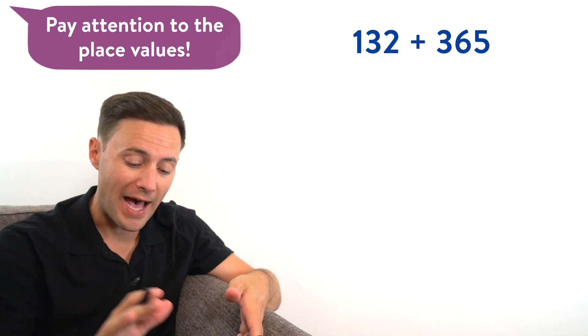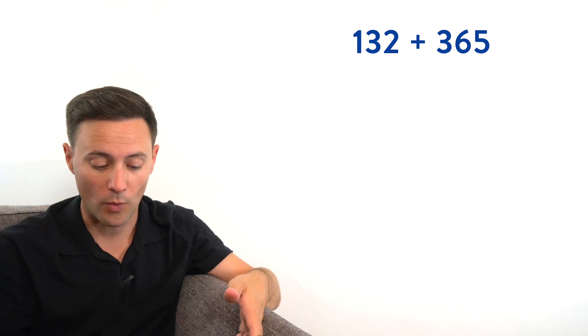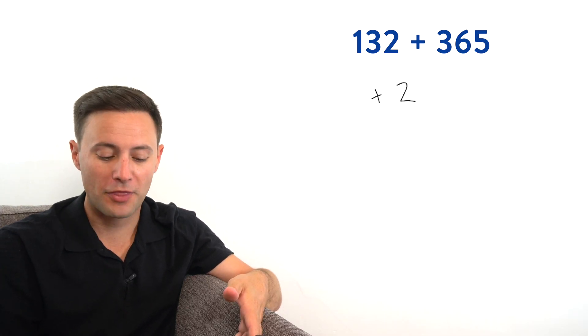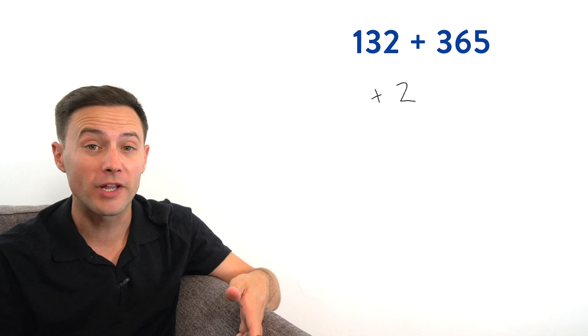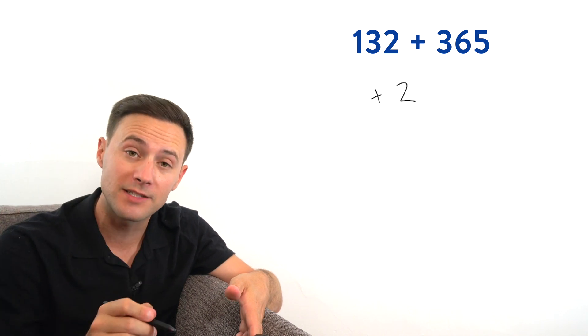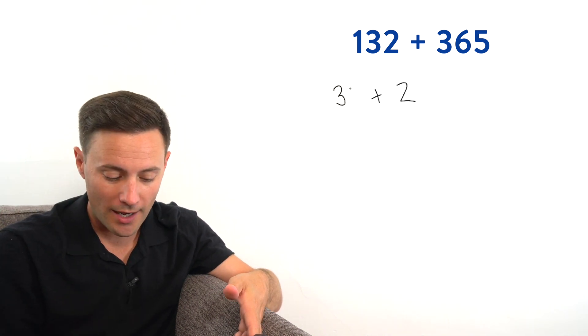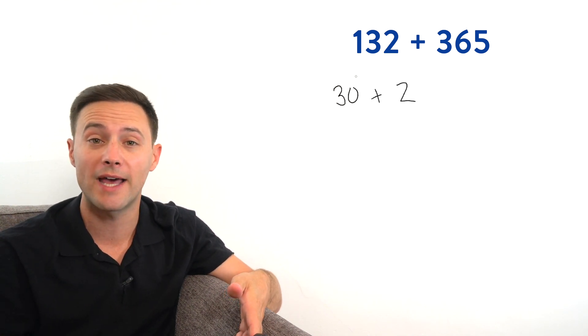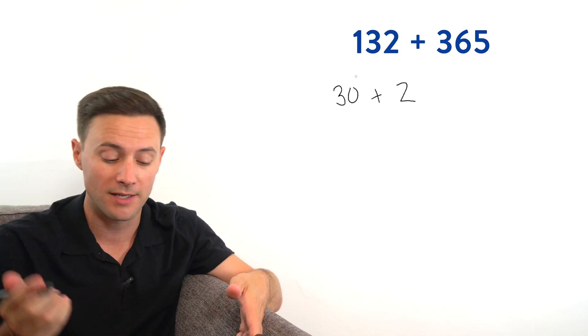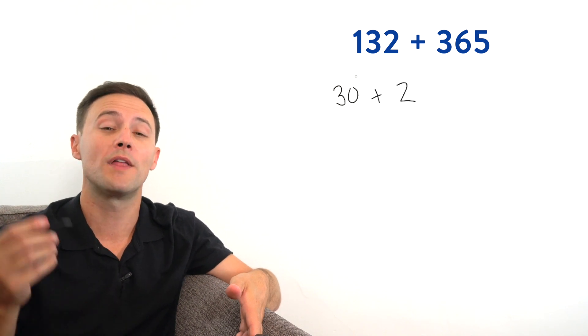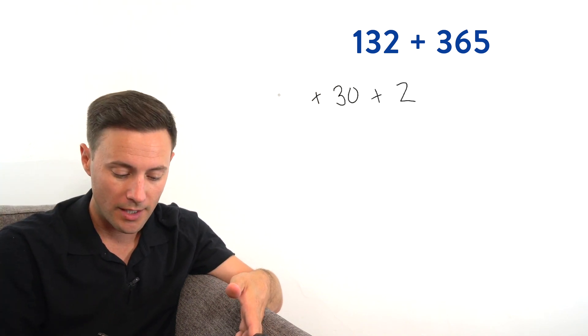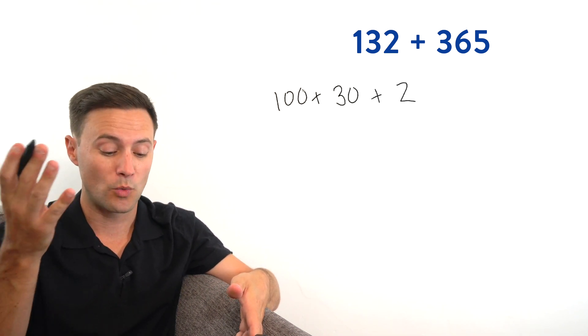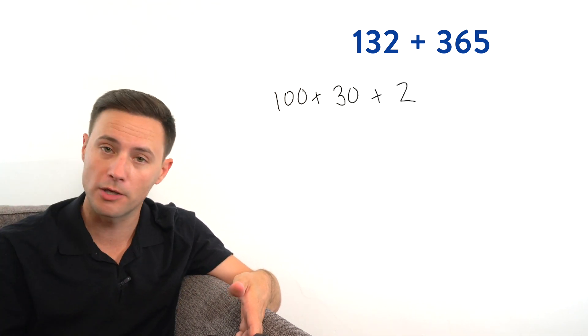Let's first look at these two numbers and kind of break them apart. 132. That is, if we break it apart, we have two ones. That three is really 30, because that three is in the tens place. So that's a 30. And then the one, what place value is that in? That's in the hundreds place. So that's not really just the one, that's a 100. So we could think of 132 as 100 plus 30 plus two. No worries. We haven't changed anything yet.